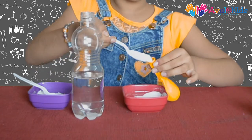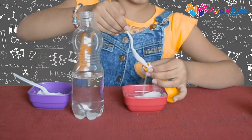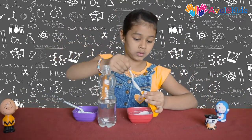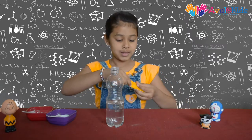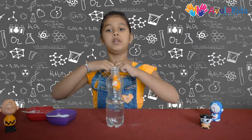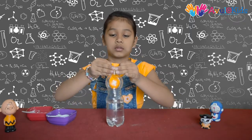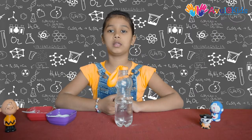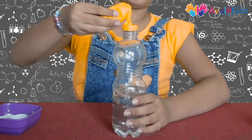Take the balloon and add one spoon of baking soda into the balloon. Then carefully fit the balloon onto the bottle opening. Once the balloon is fitted on the bottle's nozzle, allow the baking soda to fall into the bottle.